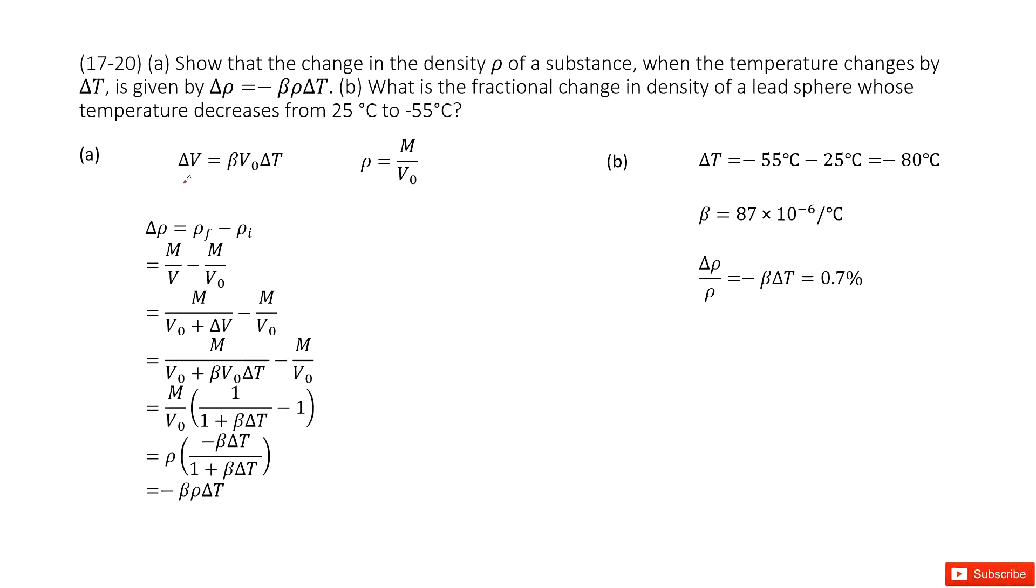So in this one, we look at the textbook. How about the volume changes? We have delta V equal to beta V0 delta T. This is the volume change. And the density function initially is just M divided by V0.